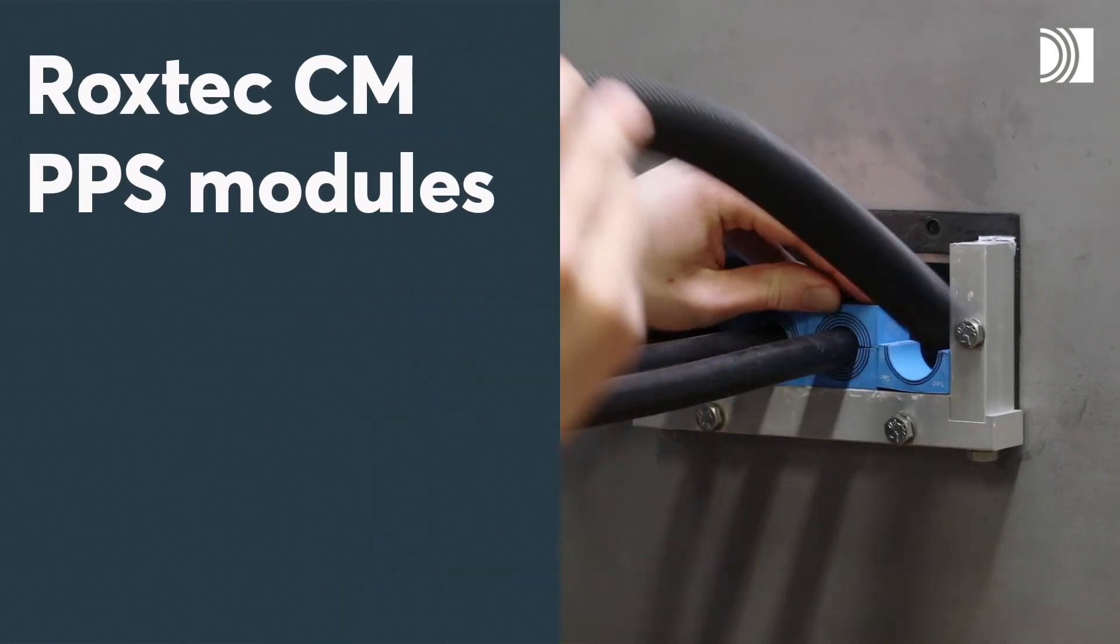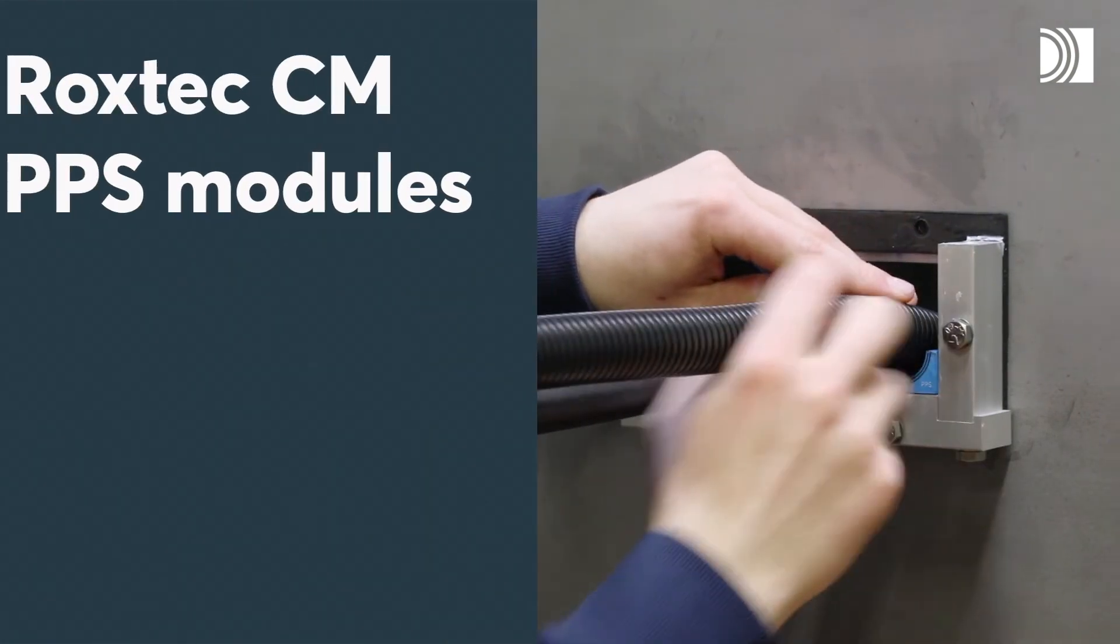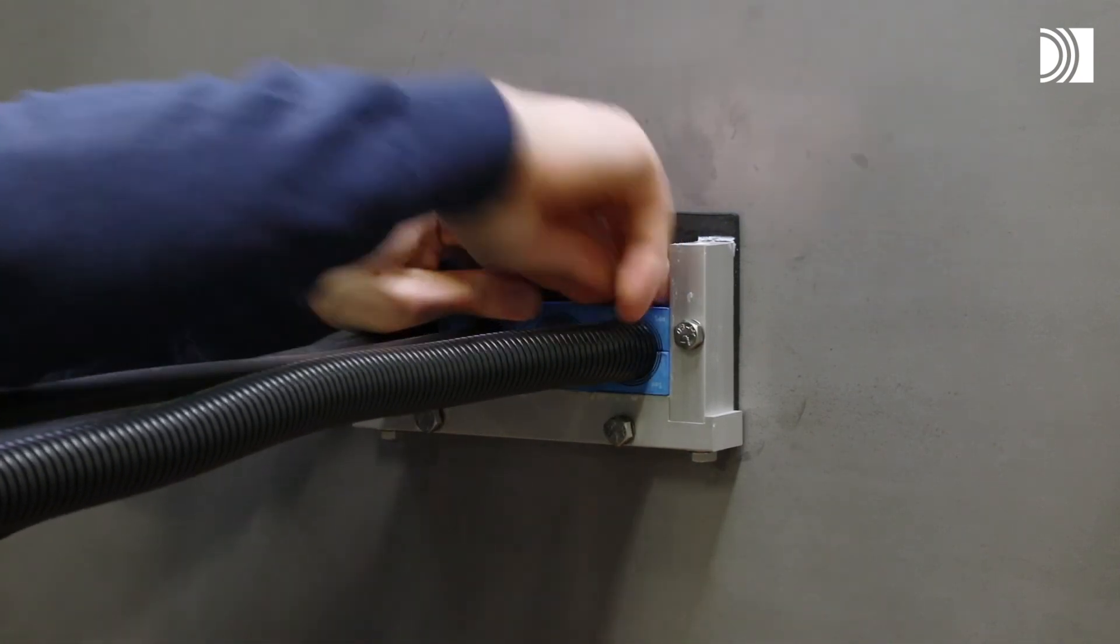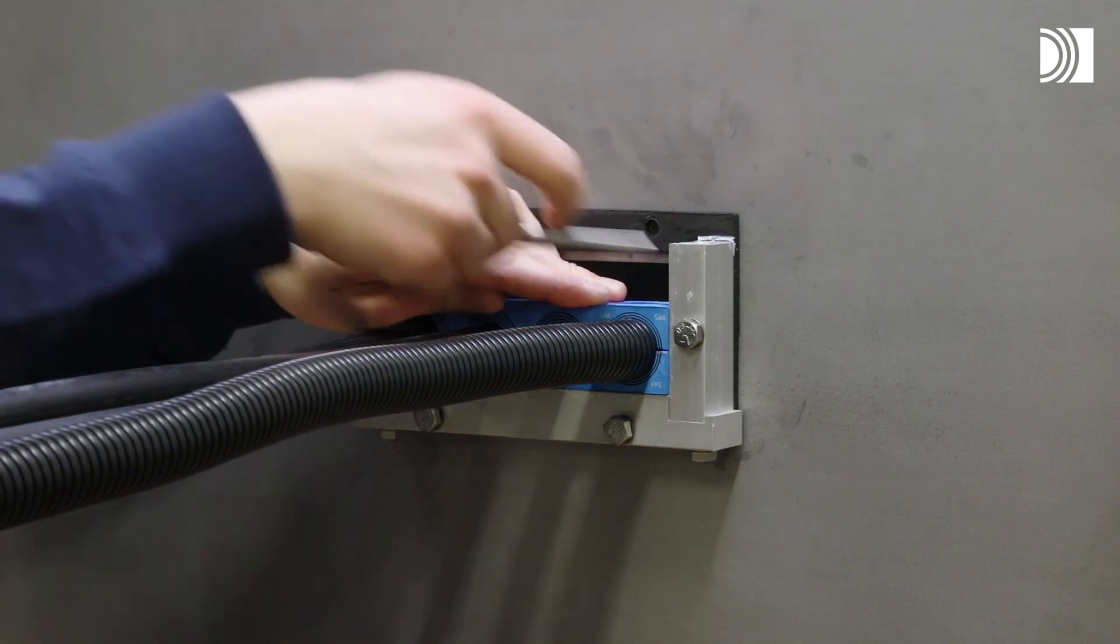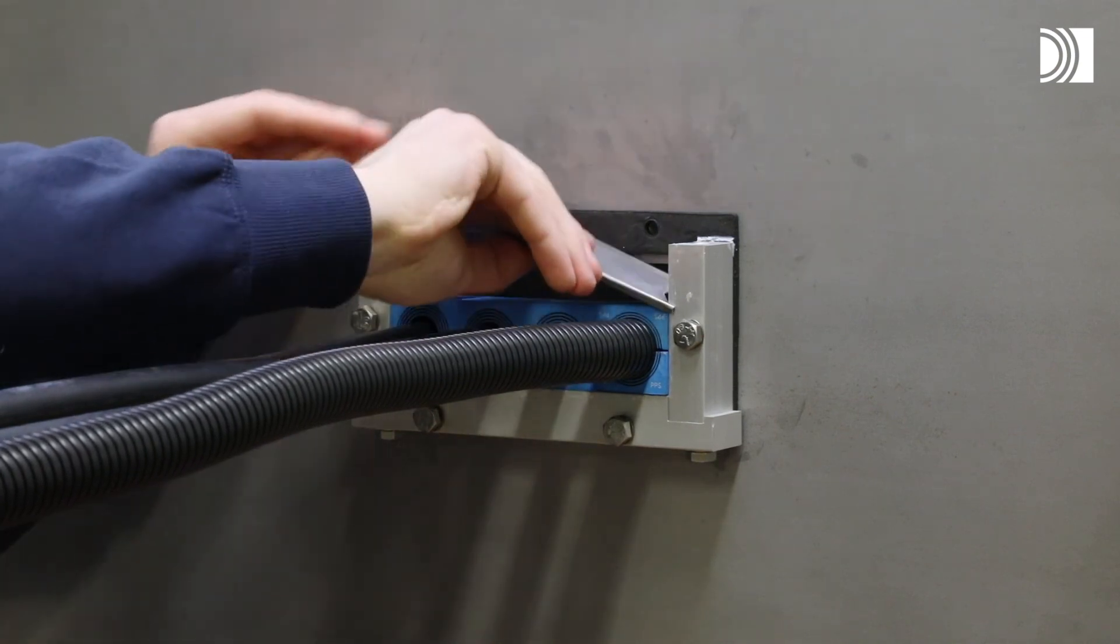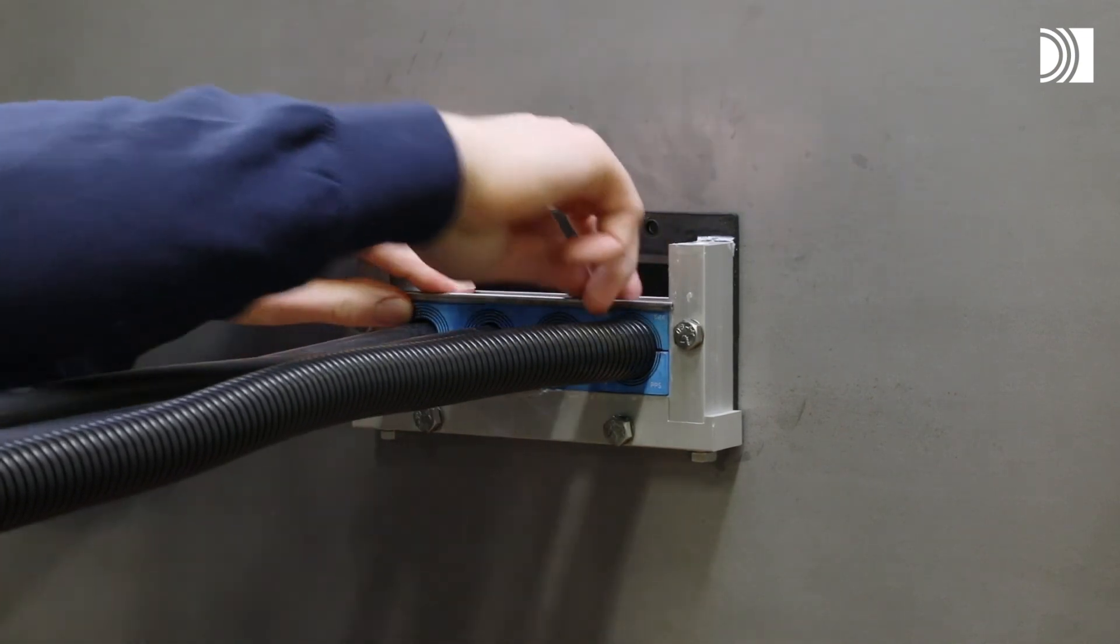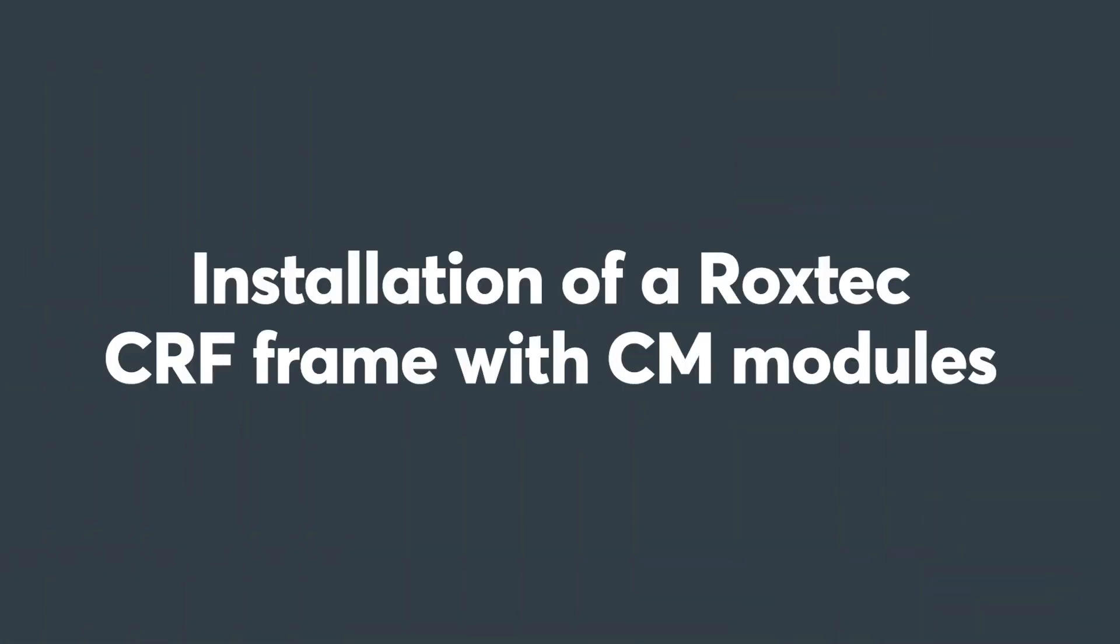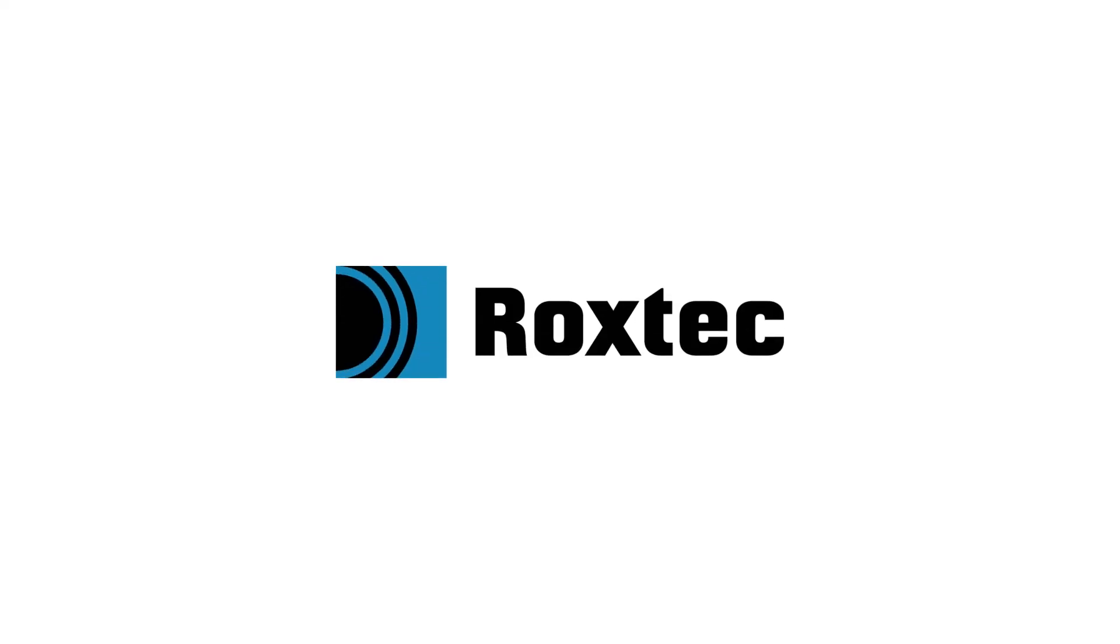Roxtec CM PPS modules can be used in CRF frames for applications that include plastic conduits. The same installation procedure is used for the PPS versions. Peel the layers to adapt the modules to the conduit size and install them into the frame.